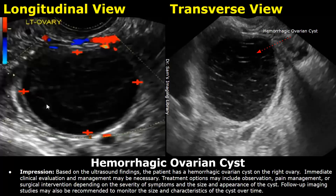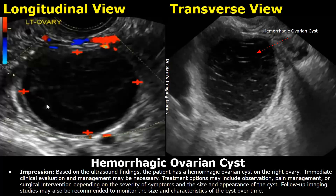In the impression, you can write: based on the ultrasound findings, the patient has a hemorrhagic ovarian cyst in the right ovary. Then you must write: immediate clinical evaluation and management may be necessary. You can write about treatments such as observation, pain management, or surgical intervention depending on the severity of symptoms and the size and appearance of the cyst. Also mention that follow-up imaging may be recommended to monitor the size and characteristics of the cyst over time.